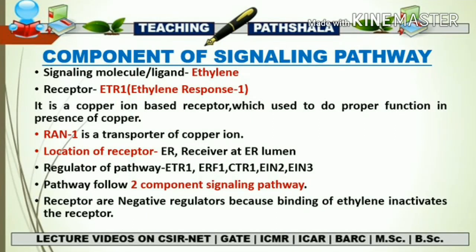The first thing that comes to mind is the signaling molecule or ligand. The role of ligand is going to be played by the Ethylene phytohormone, and the receptor role is going to be played by ETR1 — the full form being Ethylene Response 1. The important property of the Ethylene receptor is that it is a copper ion-based receptor which functions properly in the presence of copper.